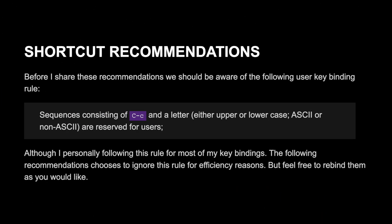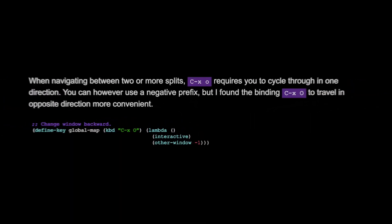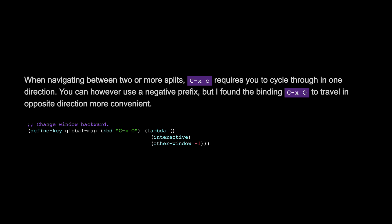Shortcut recommendations. Before sharing these recommendations, be aware of the following user key binding rule: sequences consisting of Ctrl+C and a letter (either uppercase or lowercase) are reserved for users. I personally follow this rule for most key bindings, but the following recommendations ignore this rule for efficiency reasons — feel free to rebind them as you like. Over time I found the default save-buffer shortcut Ctrl+X Ctrl+S to be a bit cumbersome, so I rebound it to Ctrl+Return. When navigating between splits, Ctrl+X O cycles in one direction; I found binding Ctrl+Shift+O to travel in the opposite direction more convenient.